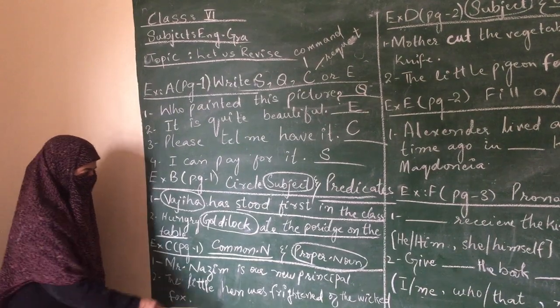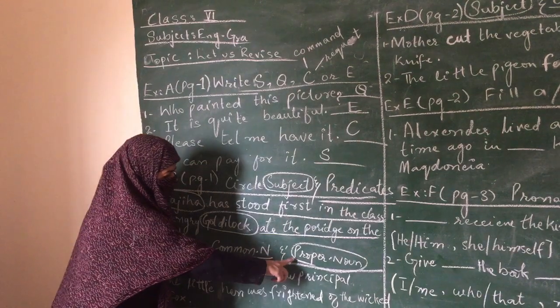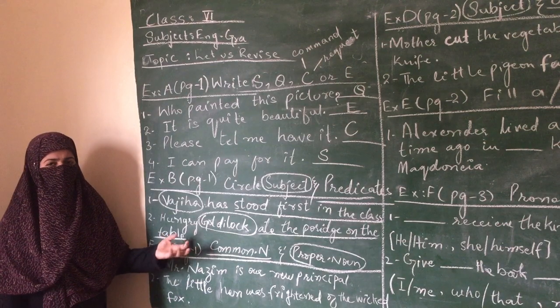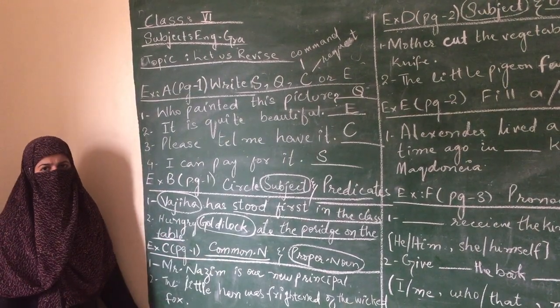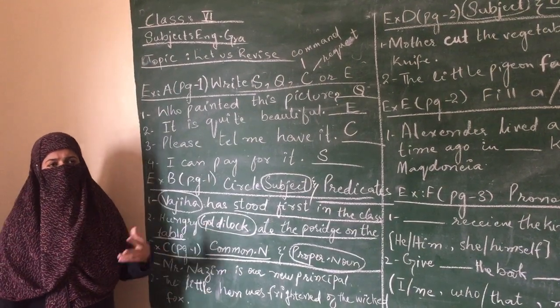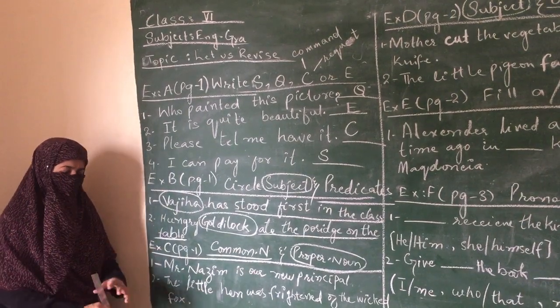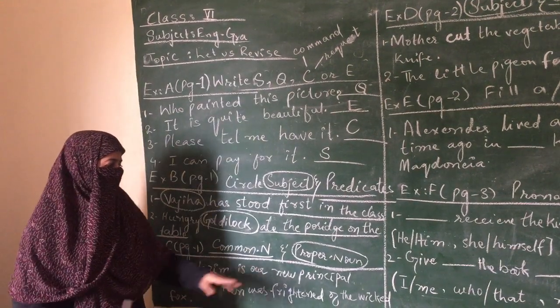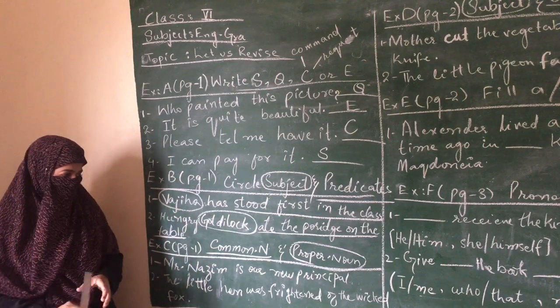In exercise C on page number 1, you have to underline common noun and circle proper noun. What is common noun? Any common name - boy, girl, principal, any bird, any animal, cat, dog, cow, hen, any place, school, hospital, house, city, or anything like text, pencil, newspaper. And what is proper noun? The specific name of a person, place, or thing.